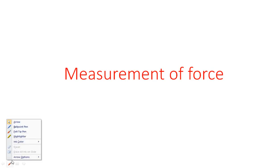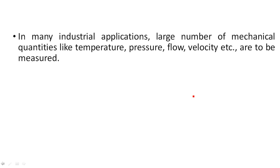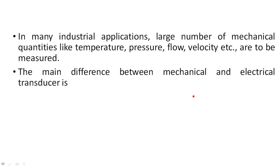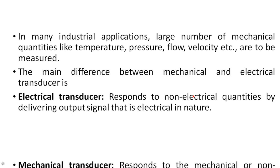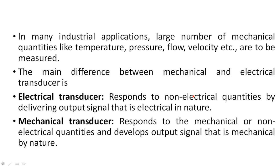In this video, I am going to explain how to measure a physical parameter like force. In industrial applications, a large number of mechanical quantities like temperature, pressure, flow, velocity, force, humidity, and moisture are required to be measured. The main difference between mechanical and electrical transducers is that an electrical transducer responds to non-electrical quantities by delivering an output signal that is electrical in nature, while a mechanical transducer responds to mechanical or non-electrical quantities and develops an output signal that is mechanical in nature.